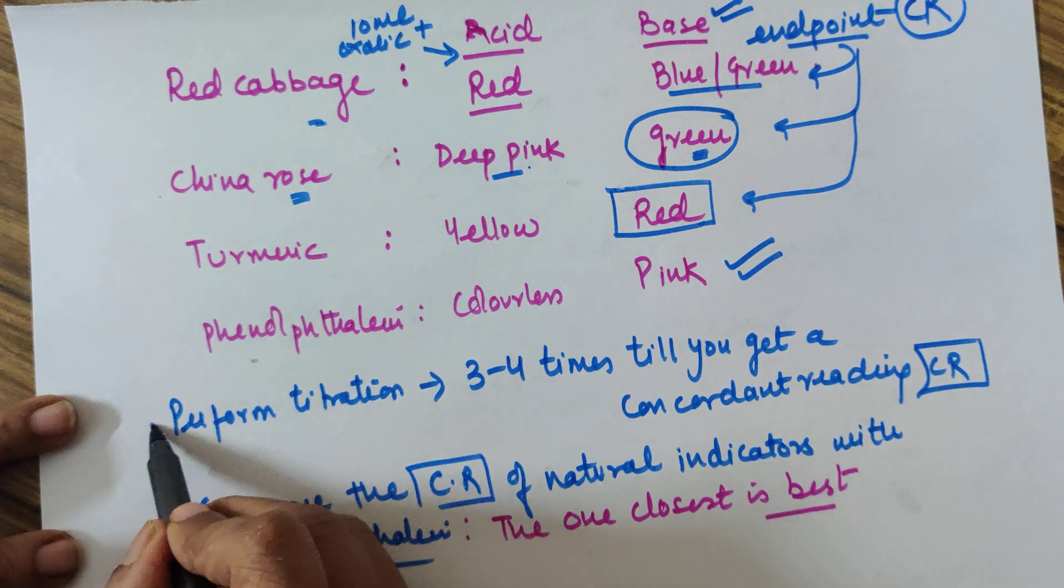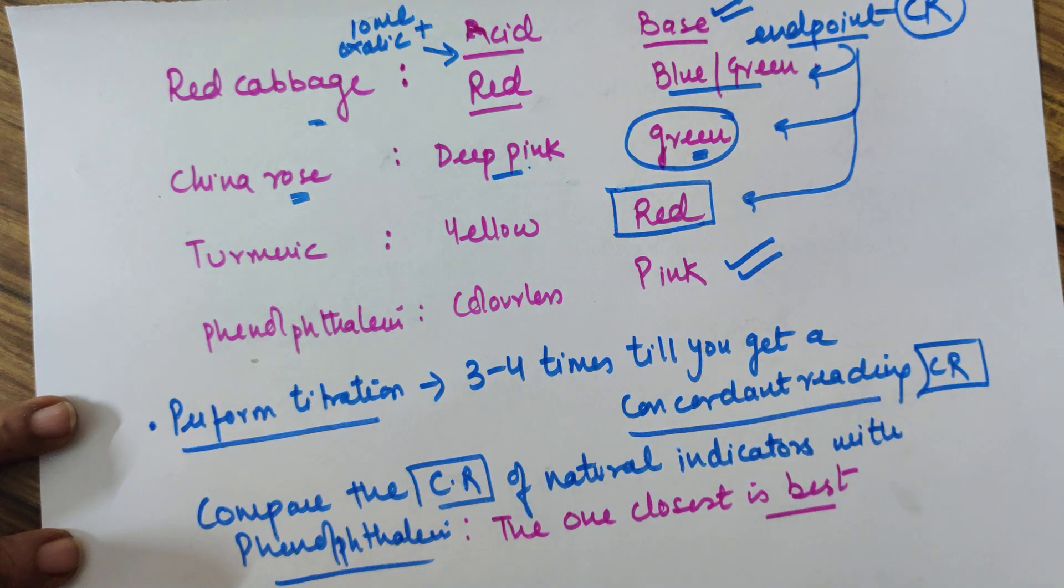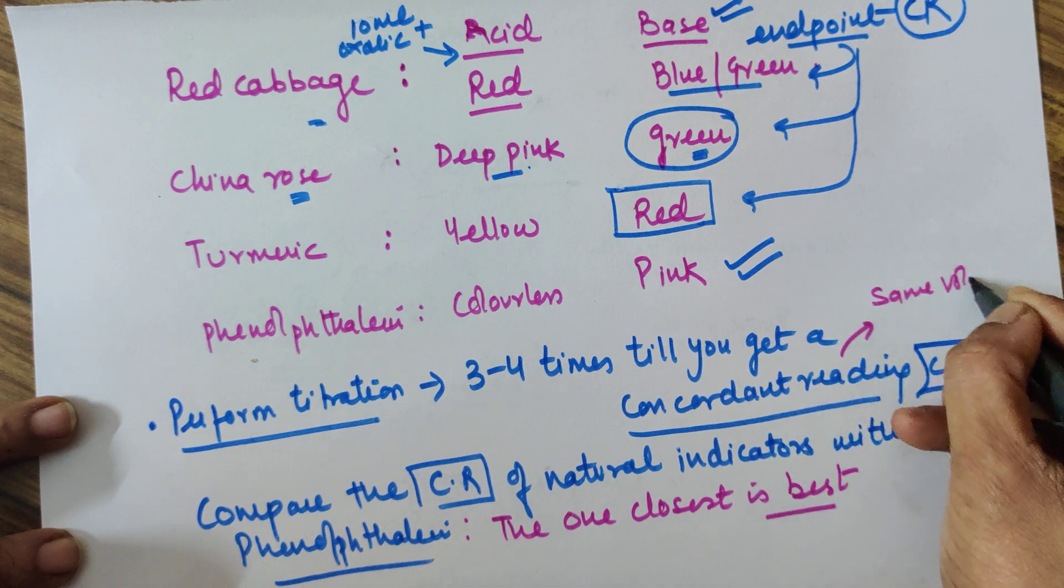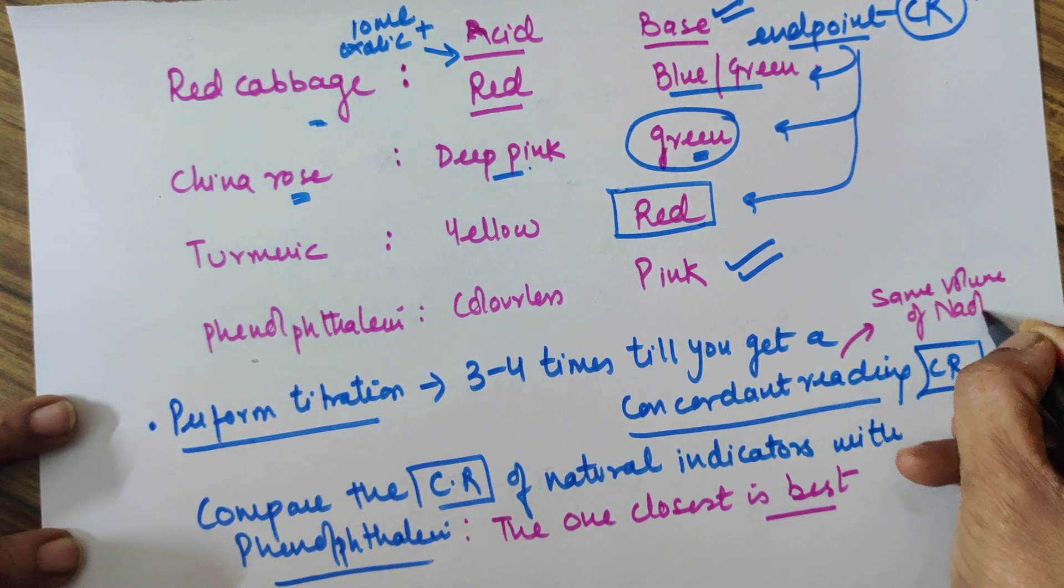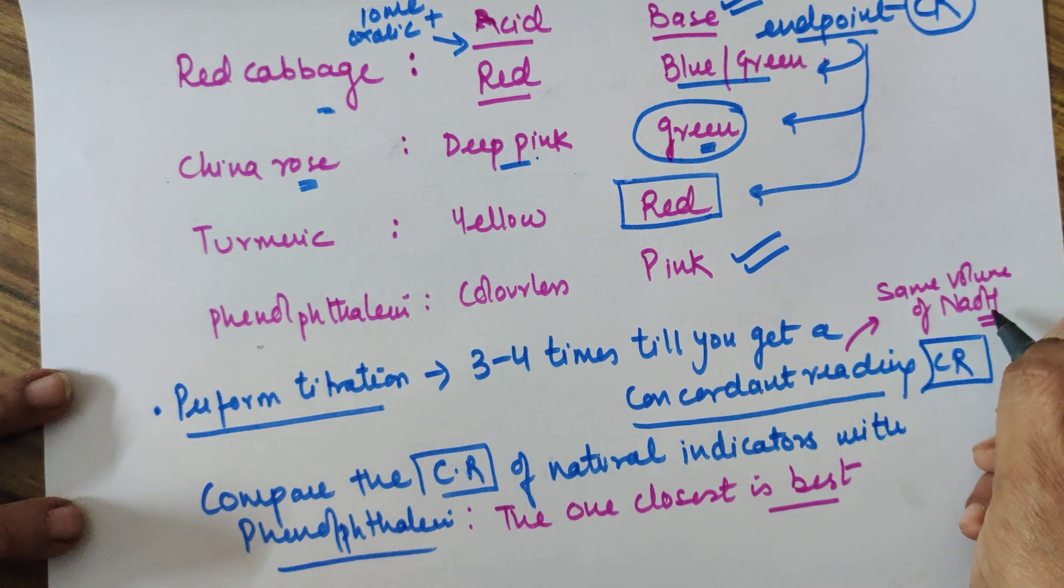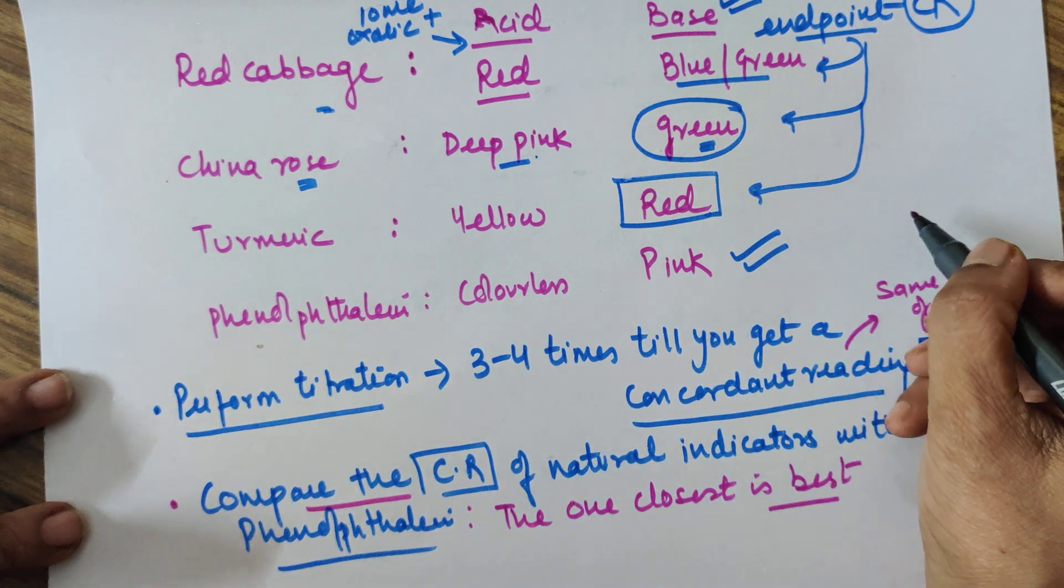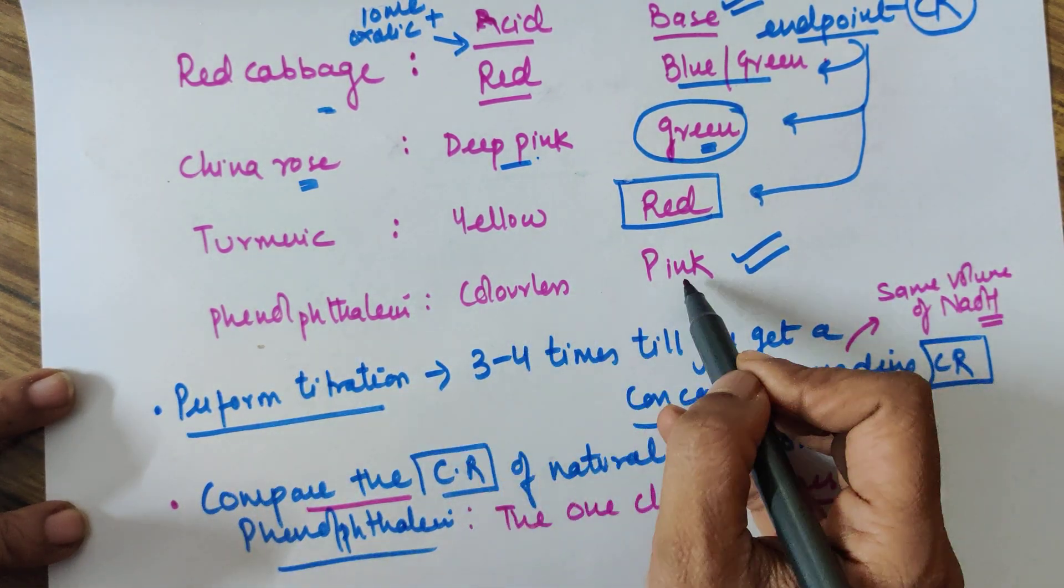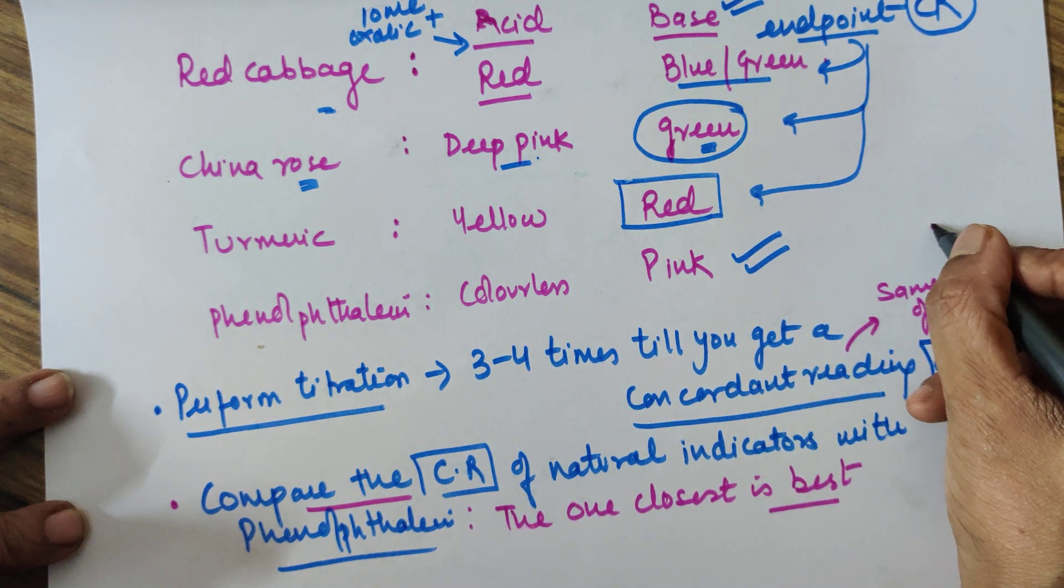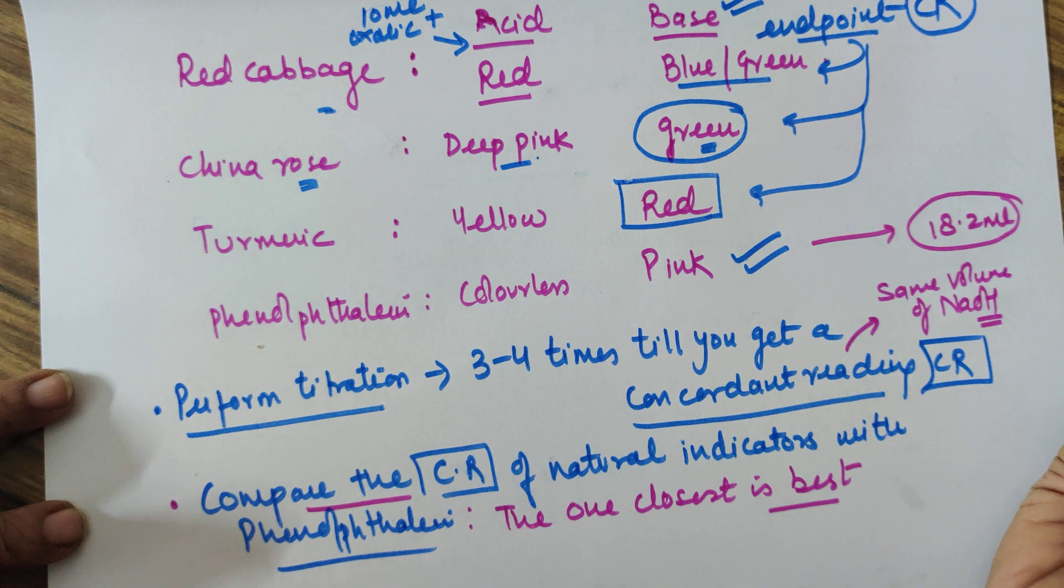You will perform the titrations three to four times till you get a concordant reading. What do you mean by concordant reading? Concordant reading is same volume of NaOH, preferably at least two times you should get the same volume of NaOH used to see the endpoint. After that, the last step is you need to compare the concordant readings. Let me suppose, I'm just giving you a brief idea. When you took phenolphthalein, let us say your reading came out to be 18.2 ml.